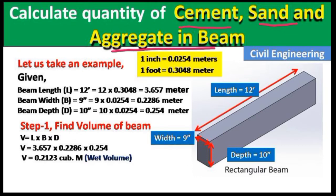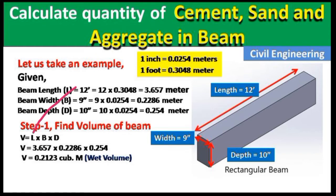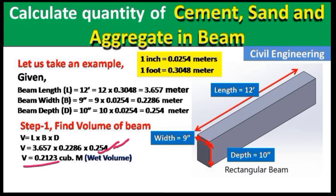Step 1: Calculate the volume of the beam. We use the formula V = L × B × D. Putting in all the values — 3.657 × 0.2286 × 0.254 — we get V = 0.2123 cubic meters. This is the wet volume.